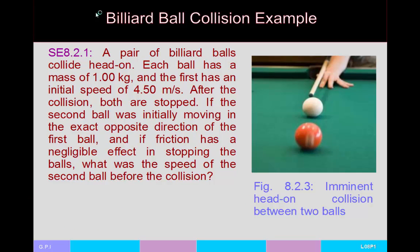Let's look at an example of a perfectly inelastic collision. There's a trick shot in billiards in which a ball is moving toward the cue ball — you shoot the cue ball at the other ball and the two collide head-on and both come to a stop. Suppose the first ball has an initial speed of 1.5 meters per second. What speed do you need to give the cue ball so that both stop after the collision?